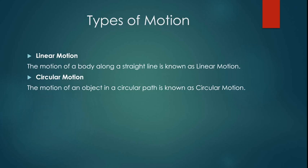In physics, circular motion is a movement of an object along the circumference of a circle or rotation along the circular path. It can be uniform with constant angular rate of rotation and constant speed, or it can be non-uniform with a changing rate of rotation.